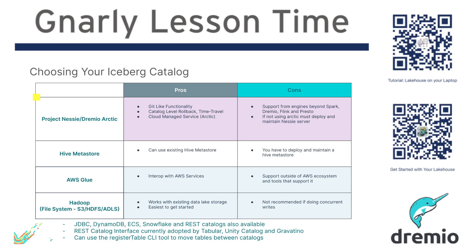Hey everybody, welcome to another gnarly lesson. Today I want to talk about iceberg catalogs. The purpose of an iceberg catalog — think of it like a basket. During Easter you might have a basket of eggs, and you can always find your eggs because they're in your basket. Think of those eggs as iceberg tables — you might have lots of iceberg tables and you want to take them with you from place to place.